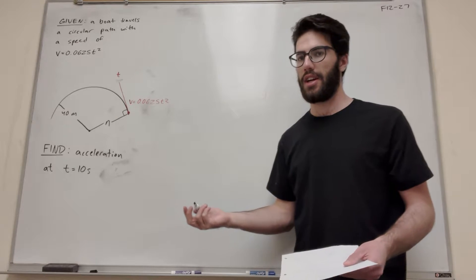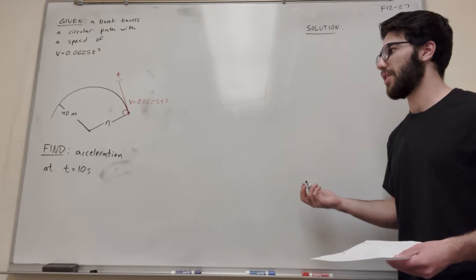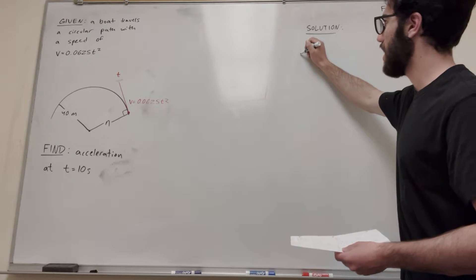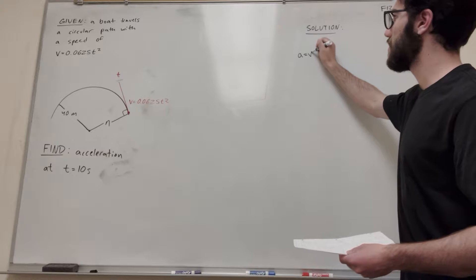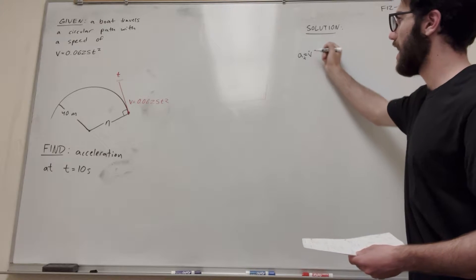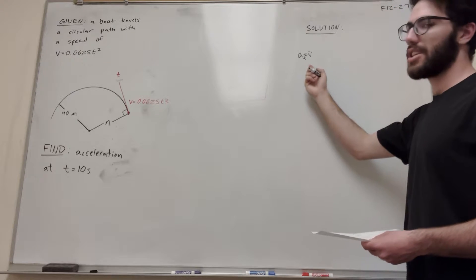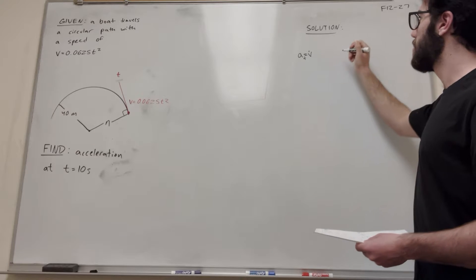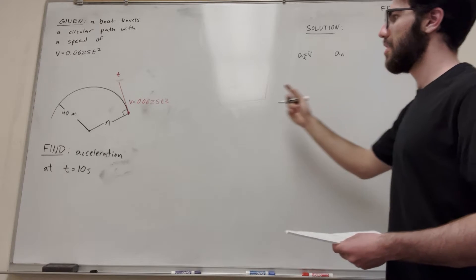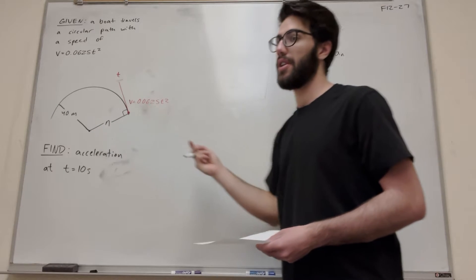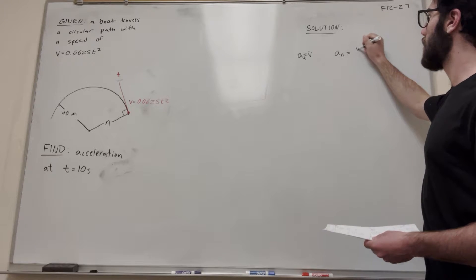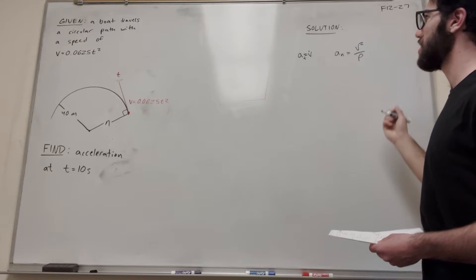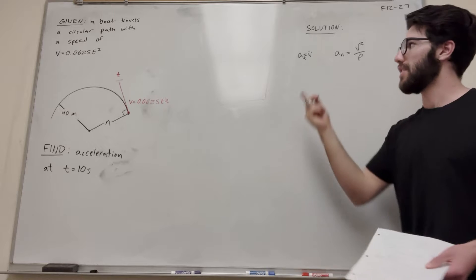When you're using this normal tangent coordinate system, we're going to have two things. Acceleration is equal to v dot, but that's in the tangent direction. Tangential acceleration is equal to v dot, but then there's also acceleration normal, which is the force pulling you inward, and that's equal to velocity squared over the radius of curvature.